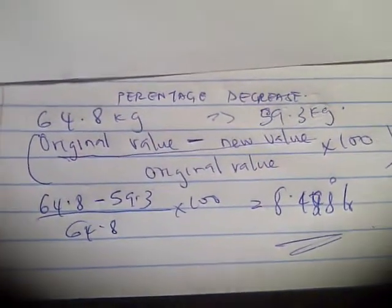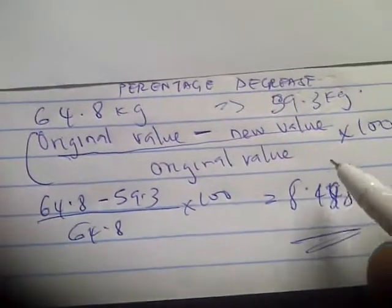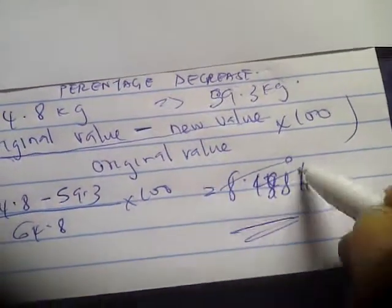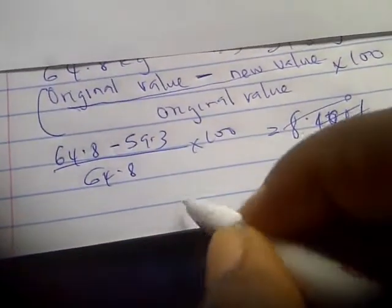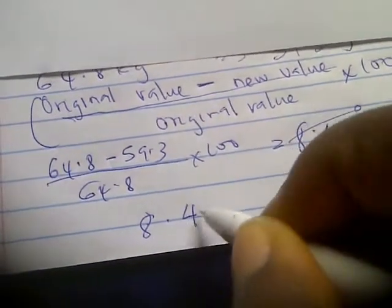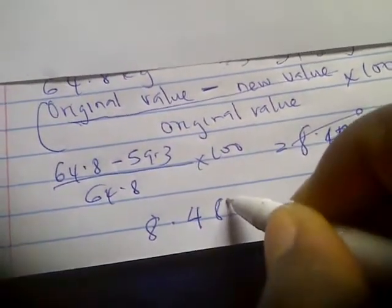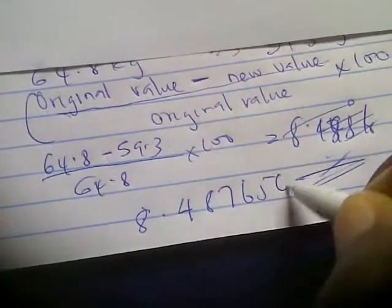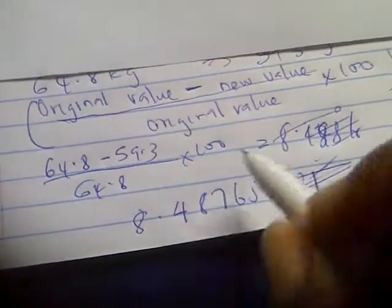Just bear in mind, whenever they're asking for a percentage decrease, when you're asked to correct to three significant figures, you better write out the full value so that you can correct it properly. The full value is 8.48765...